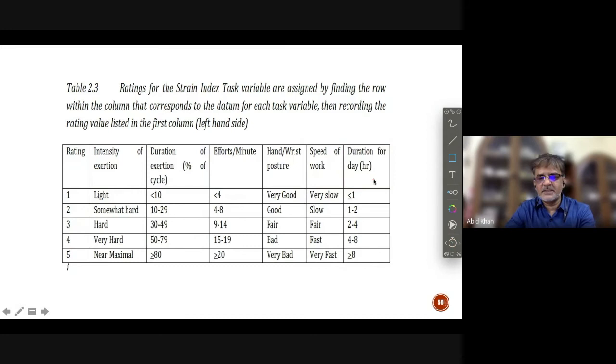So all these factors which we see over here, we have to find out in terms of rating of comfort or discomfort. So rating of comfort and discomfort is defined by this particular table. And this table helps us to make a decision whether the task was light or very hard. Whether the duration of the cycle was less than 10% or more than 50% of the time. Efforts were 4 or efforts were 20. Hand-wrist posture was very good, meaning it is in a neutral position.